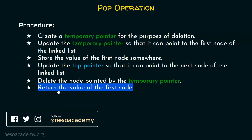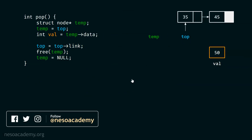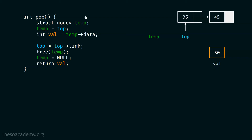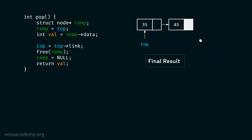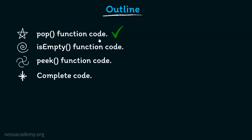Then finally, we must return the value of the first node — that is, return val. That's it. This is the complete pop function. This is the final result obtained after deleting the first node of the linked list. We are done with the pop function code.